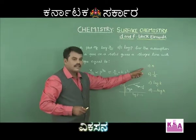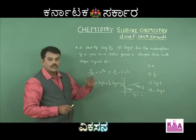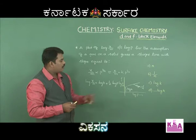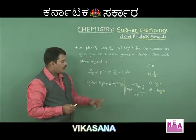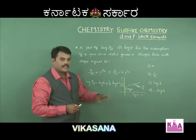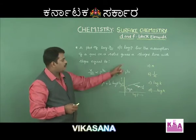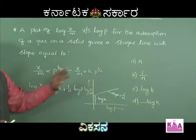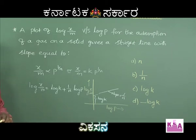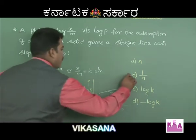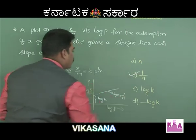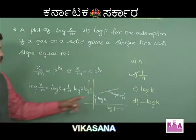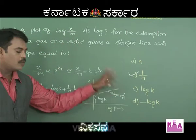The options are: option A = n, option B = 1/n, option C = log k, option D = minus log k. Since the slope of the log(x/m) versus log p graph is equal to 1/n, option B — that is 1/n — should be the correct one.